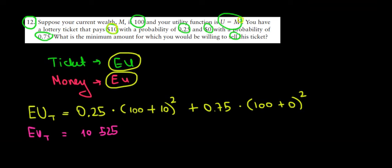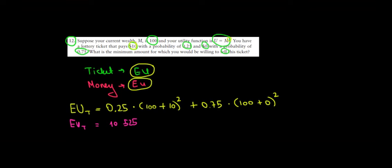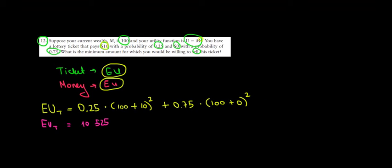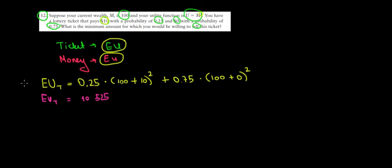Now the question is how would we sell this ticket? Well we would sell this ticket for a certain amount of money that would give us the same expected utility. Meaning that now we want to know how much money do we need to get this level of expected utility.